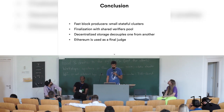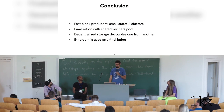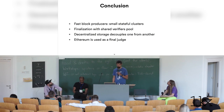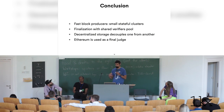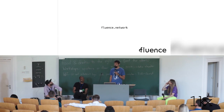So finally, we have small clusters with stateful applications which act very fast, then delayed finalization with a shared verifiers pool. We rely on decentralized storage to decouple the layers, and we use Ethereum as a final judge and source of trust. That's all about Fluence. Thanks.